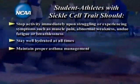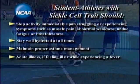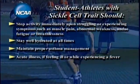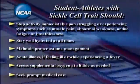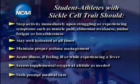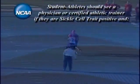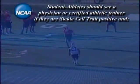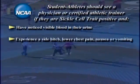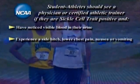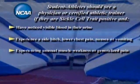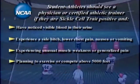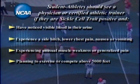Maintain proper asthma management. Refrain from extreme exercise during acute illness, if feeling ill, or while experiencing a fever. Access supplemental oxygen at altitude as needed. Seek prompt medical care when experiencing unusual distress. Athletes should see a physician or certified athletic trainer if they are sickle cell trait positive and have noticed visible blood in their urine, experience a side hitch, lower chest pain, nausea, or vomiting, are experiencing unusual muscle weakness or generalized pain, are planning to exercise or compete at a new location above 5,000 feet, or are dehydrated.